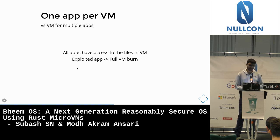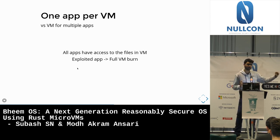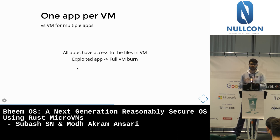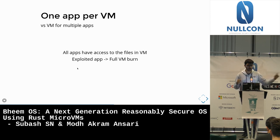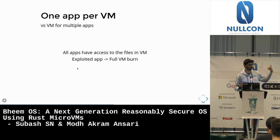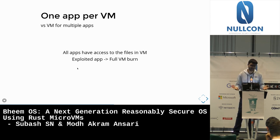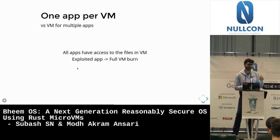A key difference: one app per VM. In QubesOS you have domains — personal, banking, disposable — and multiple apps per domain. You have to create domains, install apps inside, manage permissions. If one app in a domain gets exploited, you can still exploit other apps in that domain, and if the domain has networking, you can exfiltrate data. With BeamOS, every single app runs in its own VM — so even if an app gets exploited, it can only at best leak that app's data.